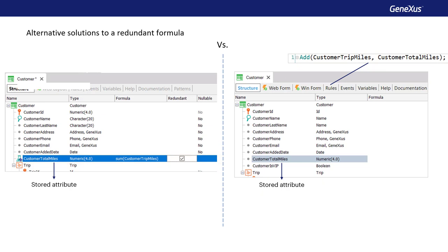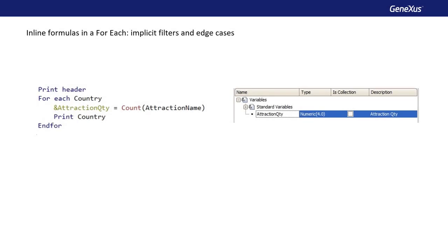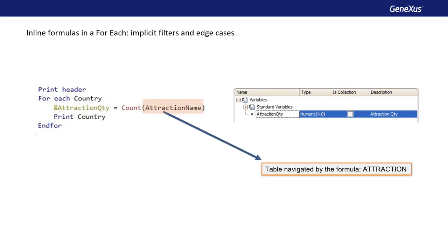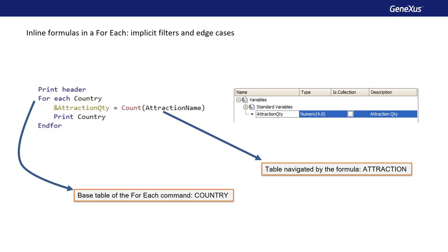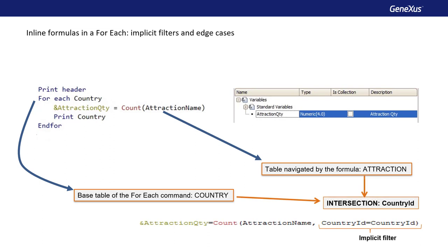Let's look at the case of inline formulas defined in the body of a ForEach command. The formulas determine the table to navigate by the attribute or attributes in brackets. In this case, we've included the AttractionName attribute, so the table to be navigated by the formula is Attraction. In the example, we don't want to count all those in the Attraction table, but those corresponding to the country where we're positioned in each iteration of the ForEach that will run through the country table. As the formula is defined within a ForEach command, it's in the context in which a table is being run through — in this case, the table of countries. Note that there is an attribute in common between both navigations, CountryID, which causes GeneXus to determine an implicit filter by the attribute in common.